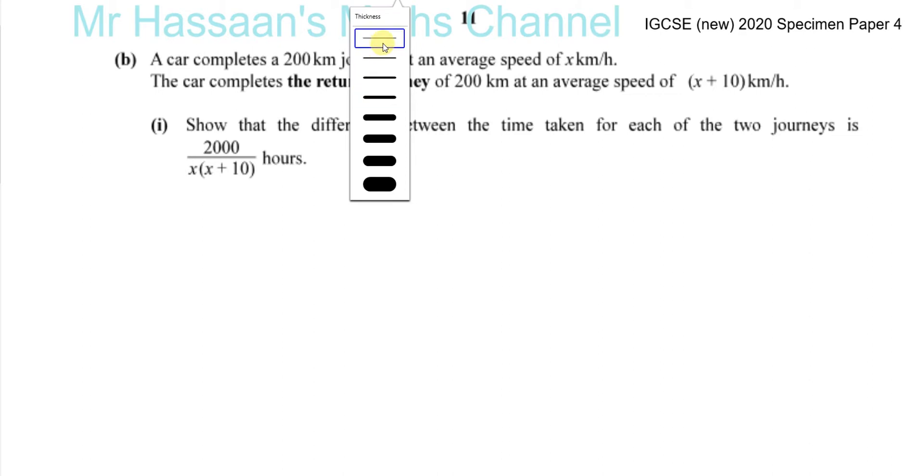Alright, so 5 part B, this is from the specimen paper 4 of the new 2020 specification. Okay, a car completes a 200 km journey at an average speed of x km per hour. The car completes the return journey of 200 km at an average speed of x plus 10 km per hour. Show that the difference between the time taken for each of the two journeys is 2000 over x times x plus 10 hours. Okay, so now we're dealing with distance, speed, and time because they're asking us to find the difference between the times taken.